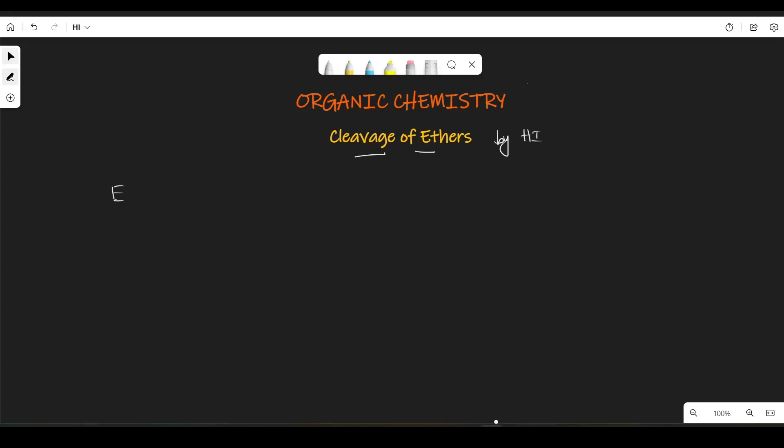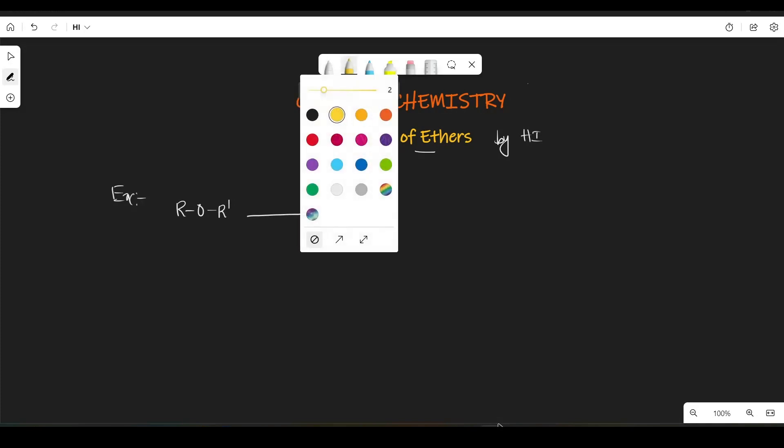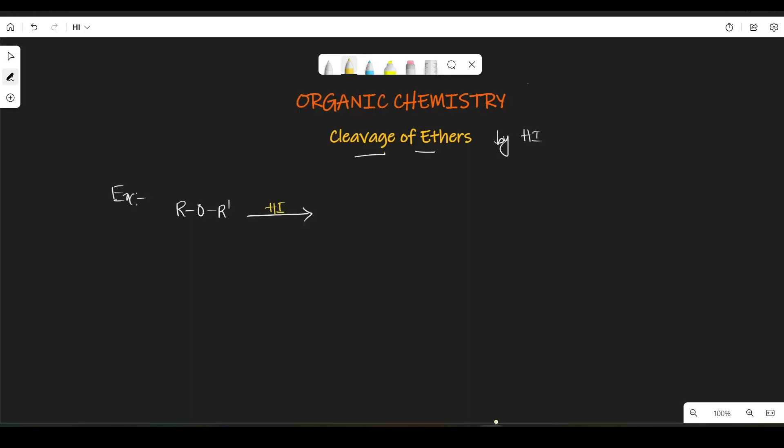So let me explain you with one example. After that I will explain you its detail mechanism. So now let's take ether R-O-R'. Now let's take this ether and in the presence of HI, let's say for example...